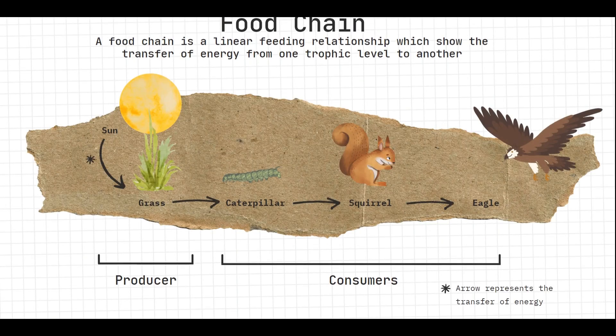What is a food chain? A food chain is a linear feeding relationship which shows the transfer of energy from one trophic level to another. It's basically a feeding relationship between organisms and shows how energy is transferred from the sun down through one organism to another. We use arrows in a food chain, and these arrows represent the transfer of energy.